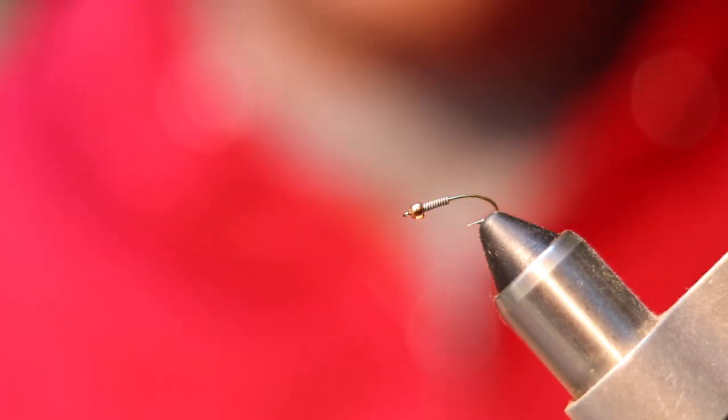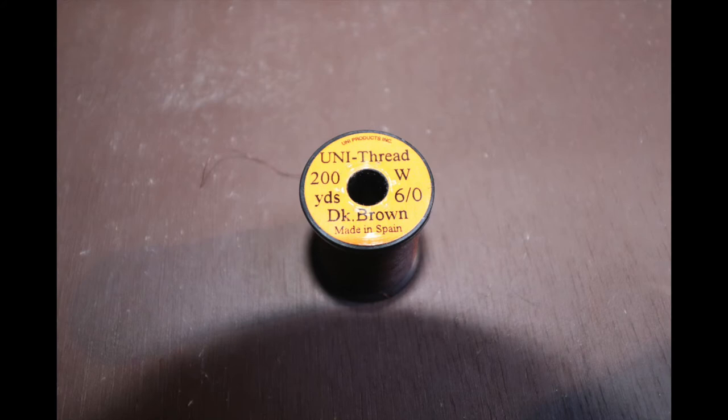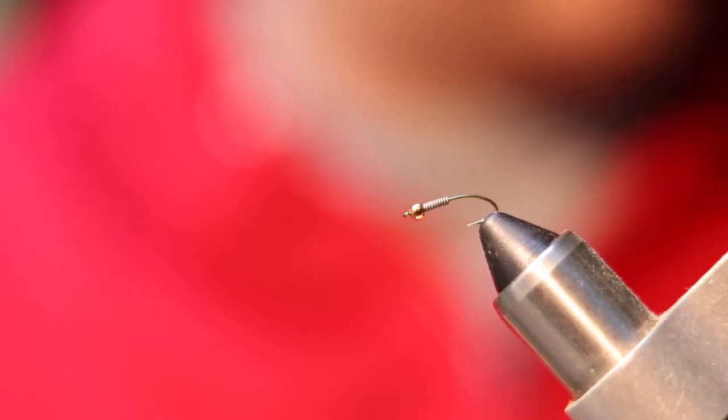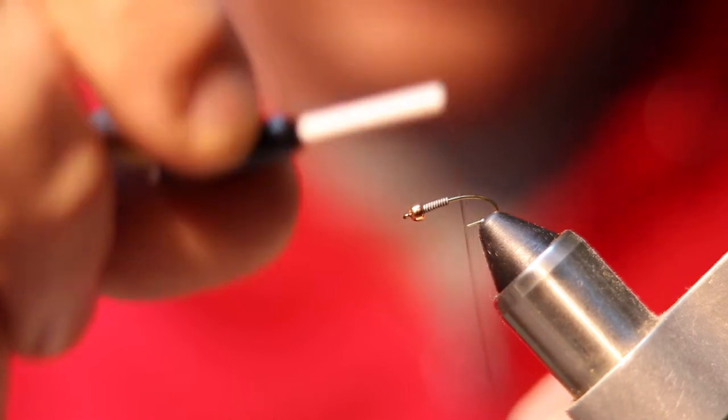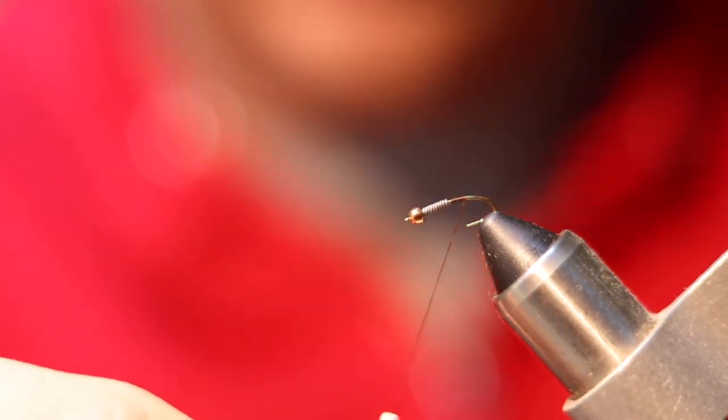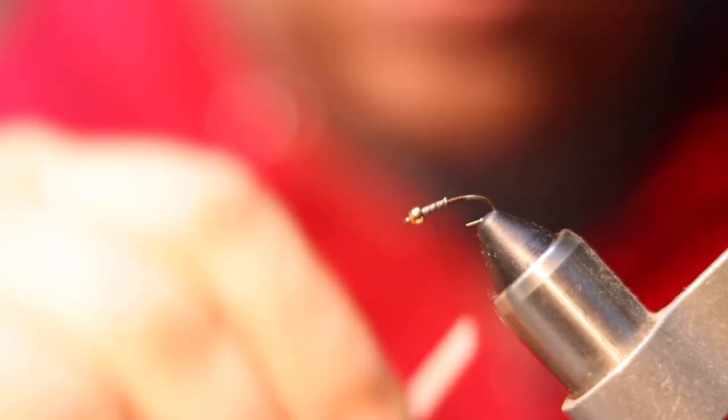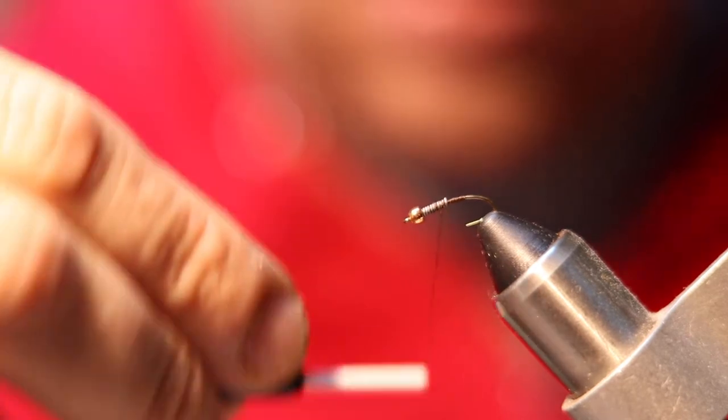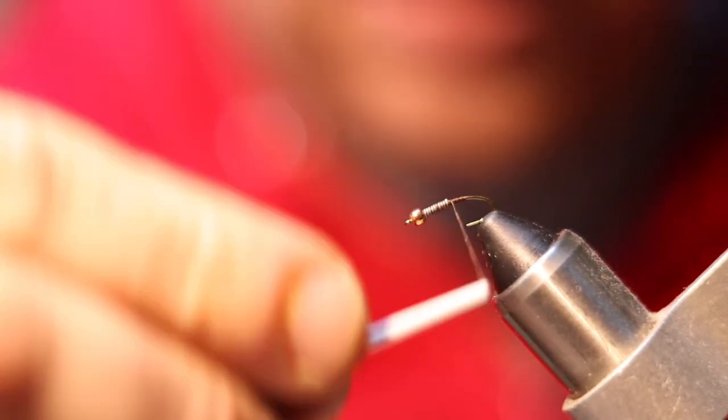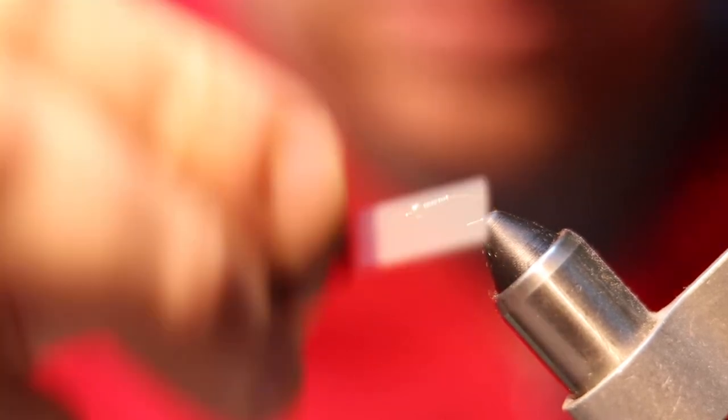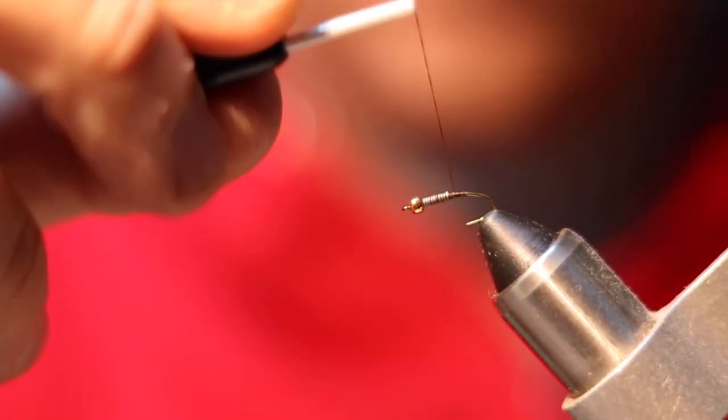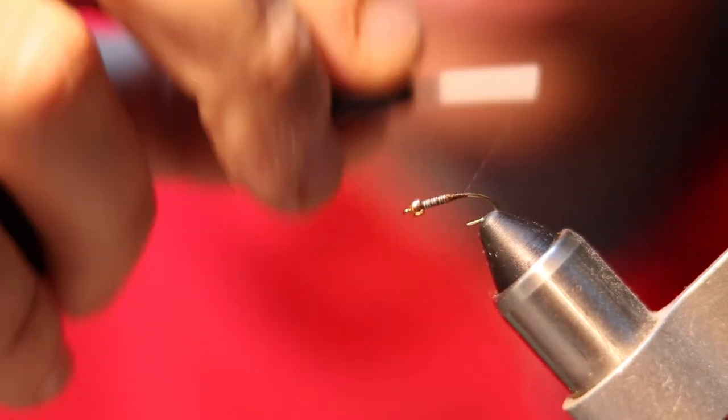Now we're ready to start the process of tying the fly. The first step is take your thread—I'm going to use brown Uni-thread in a 6-0, I believe—and you're going to wrap this around the hook 10 to 12 times and then snap the tag end off. What I like to do right here is go back up into the lead and then create a little ramp where that lead ends, just to make a smooth transition on the fly.